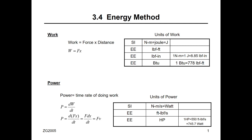The energy method is another method used to derive the equation of motion of a mechanical system. We have already known Newton's second law to derive the equation of motion. Now this energy method is also another valid method to derive the equation of motion. However, this method is only applicable to conservative systems — to conservative mechanical systems. What does it mean, conservative mechanical system?